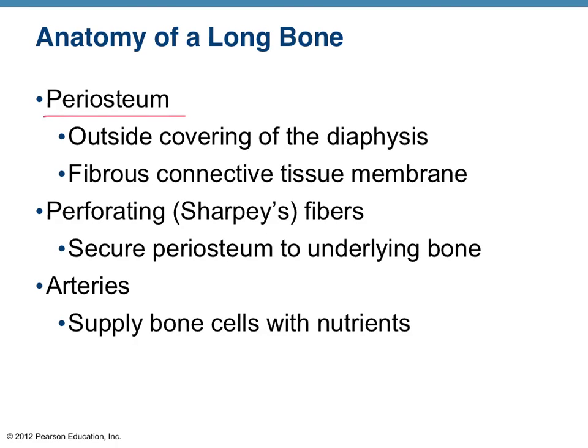The periosteum is the outside covering — the connective tissue covering. This is really strong stuff, actually continuous with the tendons and ligaments of the body. Perforating fibers, also known as Sharpey's fibers. And of course, you'll be able to pick out the arteries, which supply the bones with the vital nutrients they need. Bone tissue is far from dead tissue. It's a common myth that bones are just basically a pole or block that muscles pull on and skin hangs on, but they are very dynamic and very alive as tissue.